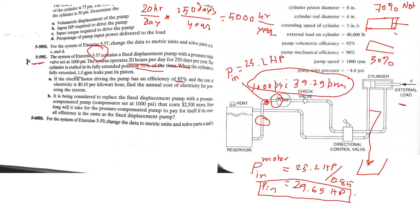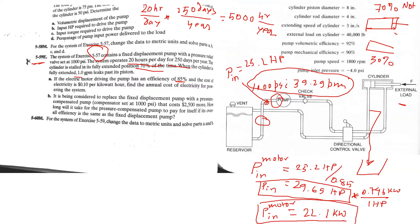Electric power is measured in kilowatts, and electricity cost is calculated based on kilowatt-hours — how many kilowatts are consumed per hour. We convert using the fact that 1 horsepower equals 0.746 kilowatts. So the motor input of 29.65 horsepower converts to 22.1 kilowatts. Whether the system is working or not, this is the amount of power the motor draws.